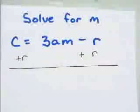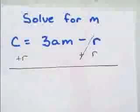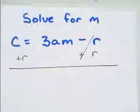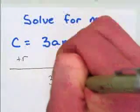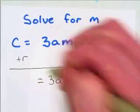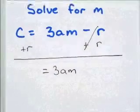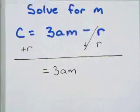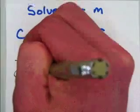And now I'm going to start over here on the right-hand side. Minus r and plus r cross off. They reduce to 0. 3am. And now on the left-hand side, I notice again, c and r are not like terms, so I'm just going to have c plus r.